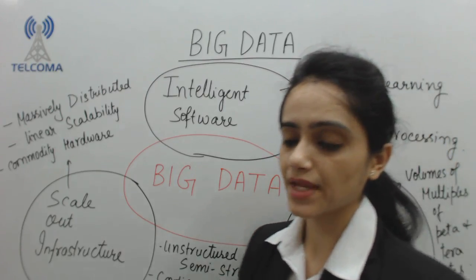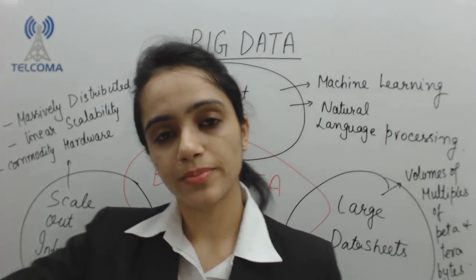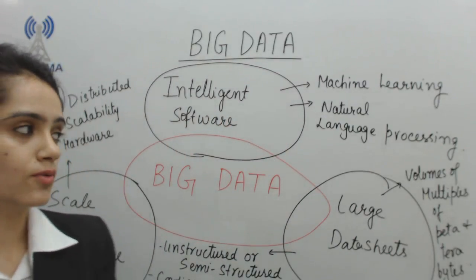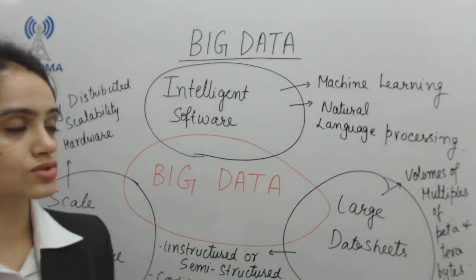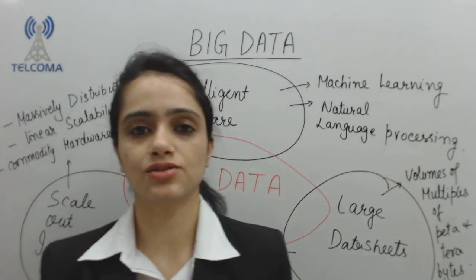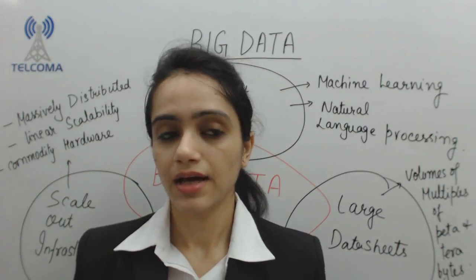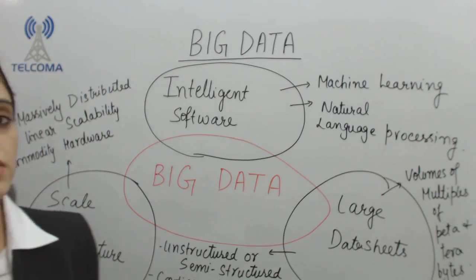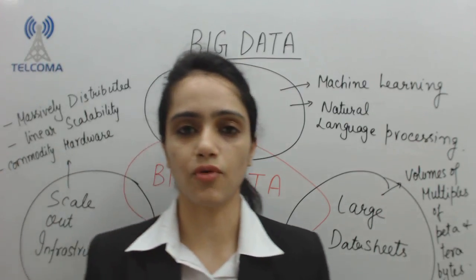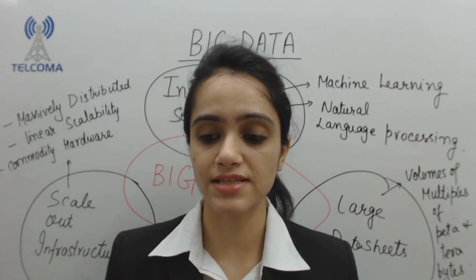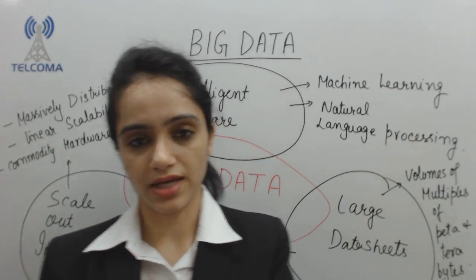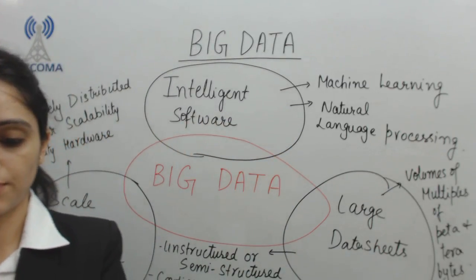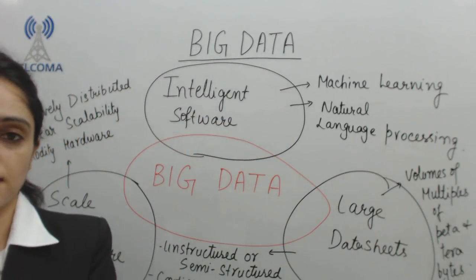All of these things have a common integration, and that integration is big data. For big data, we require intelligent software, large data sheets, and scale-out infrastructure. A combination — an integration — of all three gives us big data.